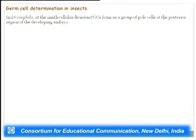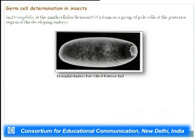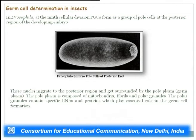In Drosophila, at the 9th cellular division, PGCs form as a group of pole cells at the posterior region of the developing embryo. Nuclei migrate to the posterior region and get surrounded by the pole plasm — the germ plasm. The pole plasm is composed of mitochondria, fibrils, and polar granules; the polar granules contain specific RNAs and proteins that play an essential role in germ cell formation.